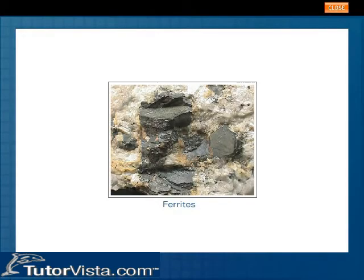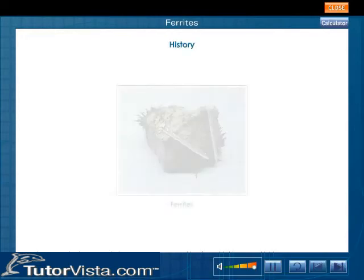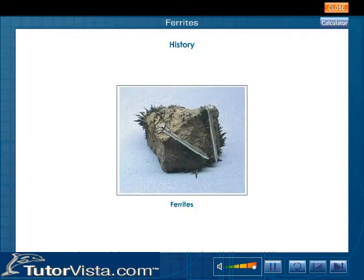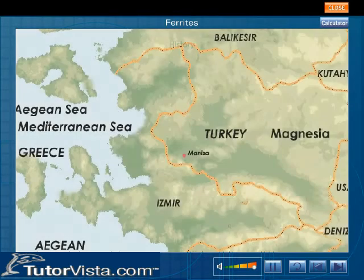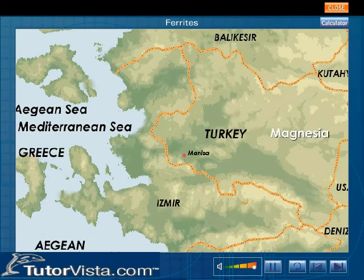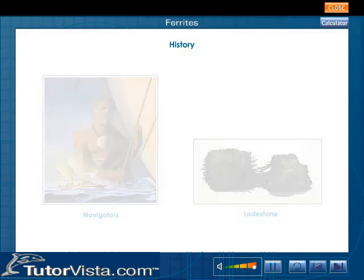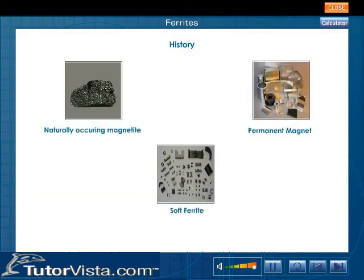Ferrites, or the stones that could attract iron, were discovered before the birth of Christ. These stones were found in the district of Magnesia in Asia Minor, hence the name magnetite. Navigators used magnetite as load stones to locate magnetic north. Naturally occurring magnetite is a weak hard ferrite. Hard ferrites are permanent magnets.